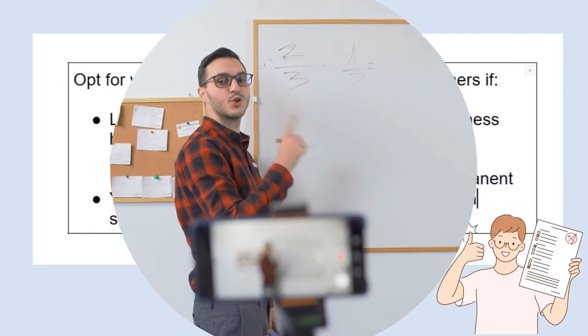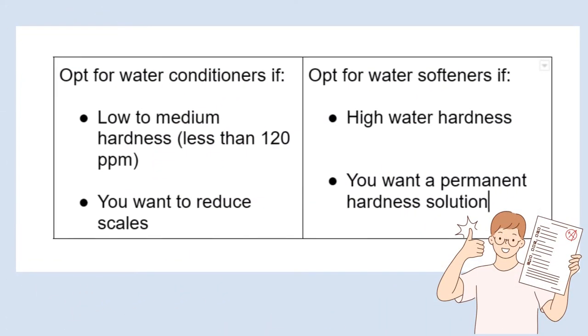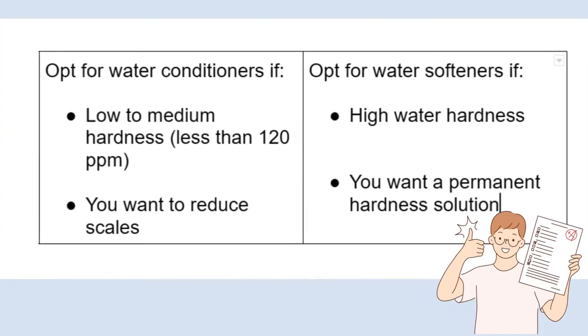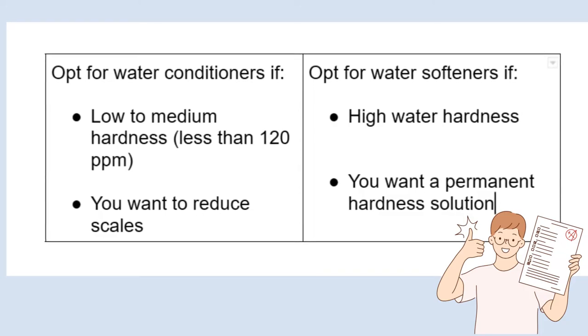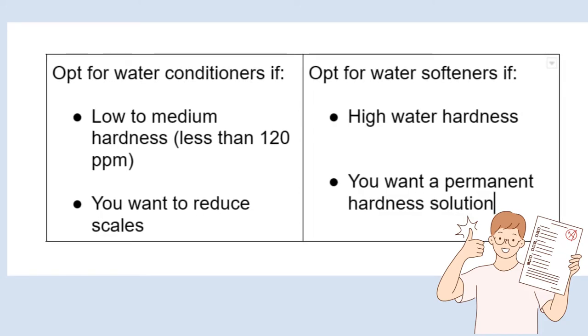So here's the takeaway. If you've low to medium hardness and are only looking to reduce scales in pipes and fixtures go for water conditioners AKA salt-free softeners. But if you've high water hardness and want a permanent solution for bathing, laundry and kitchen go for water softeners.